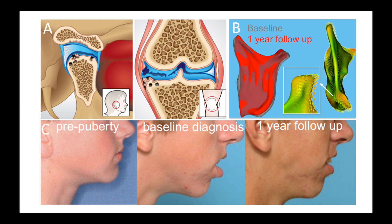From a clinical perspective, such degenerative conditions in the condyles will lead to marked facial changes, as seen in the bottom row comparing the facial changes on a patient pre-puberty and at baseline diagnosis — how much his profile had changed because of the degenerative condition in the condyle.